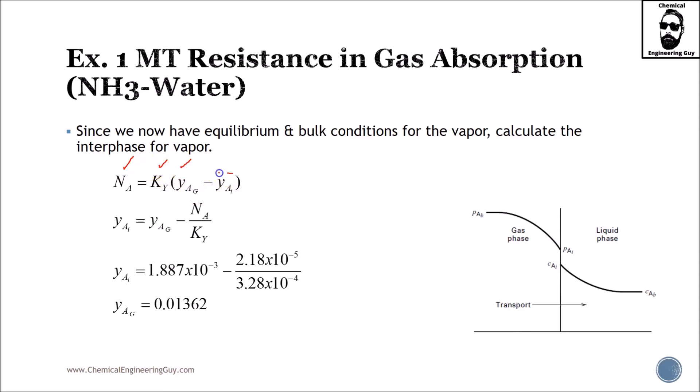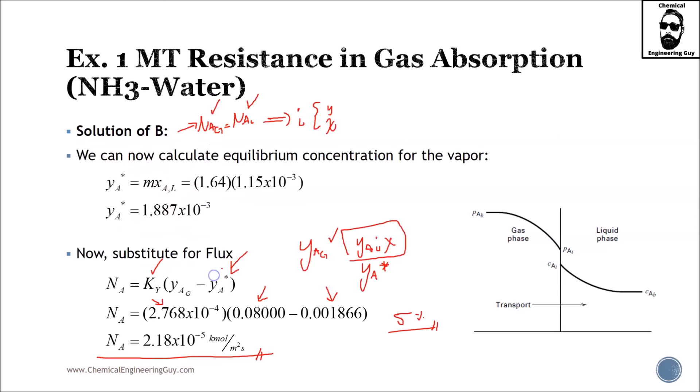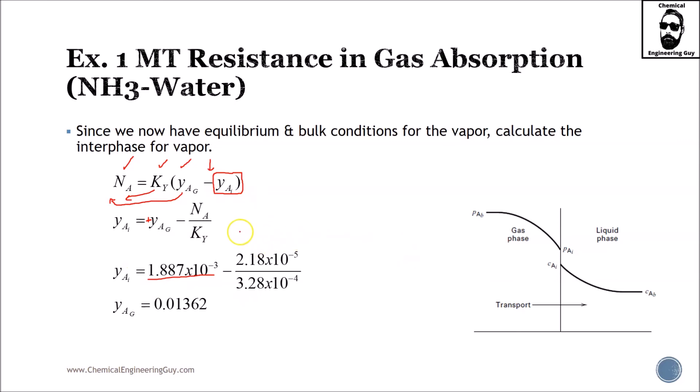I could substitute here, here, and here and solve for this one, or I can solve this one first. What I do is send this dividing, then I send this subtracting, and because this has a negative sign, this becomes positive and this becomes negative. Substituting data, I obtain N_a which is right here. The interface condition is 0.0136, so this is in the interface.